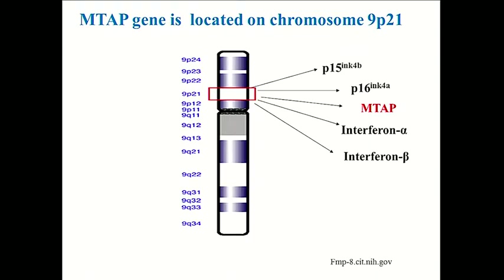Where is MTAP located? What's important is that it's frequently co-deleted with CDKN2A and CDKN2B at the 9p21 locus, so this is a very common deletion in cancer. MTAP is often co-deleted, which makes it a little difficult to distinguish between the effects of MTAP deletion and these tumor suppressors.